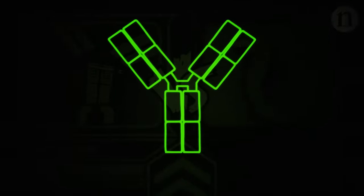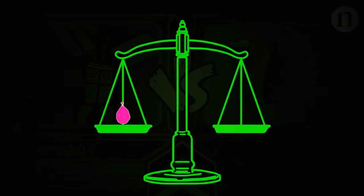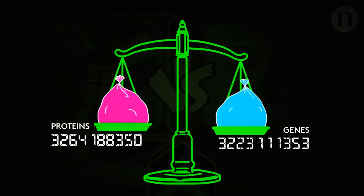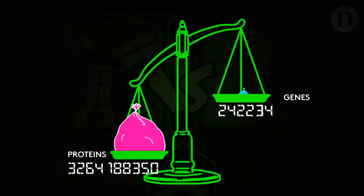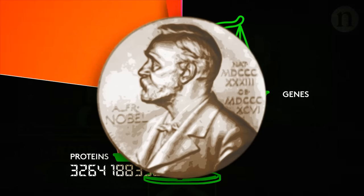But these antibodies, made from two light chains and two heavy chains, are proteins. And billions of different proteins should need billions of genes to make them. Humans have around 20,000 genes. The solution to this problem was a Nobel Prize-winning discovery.